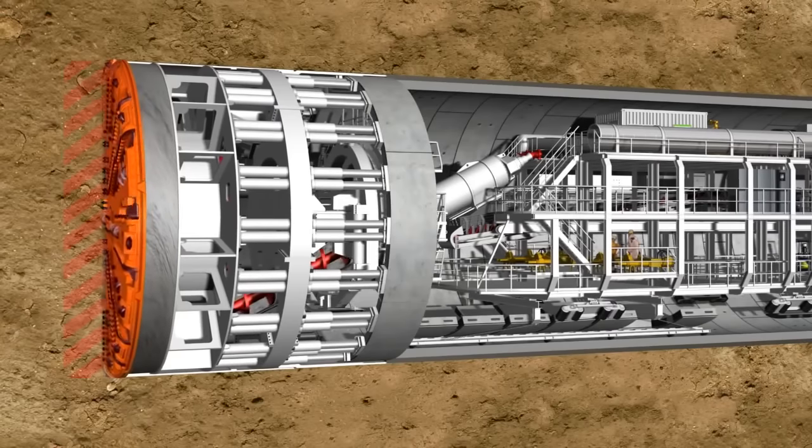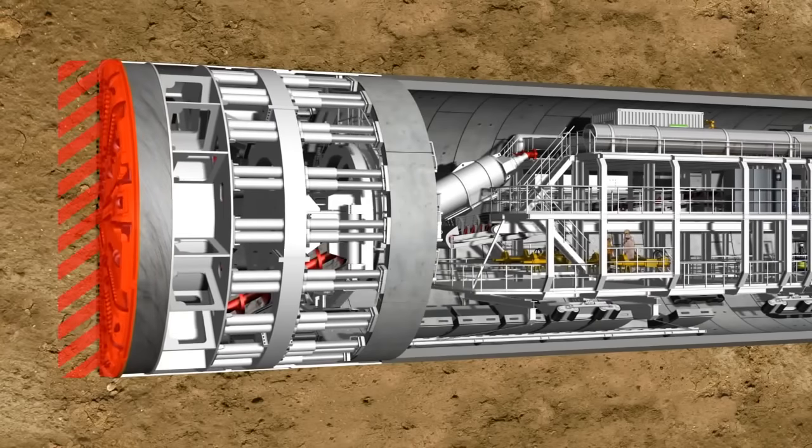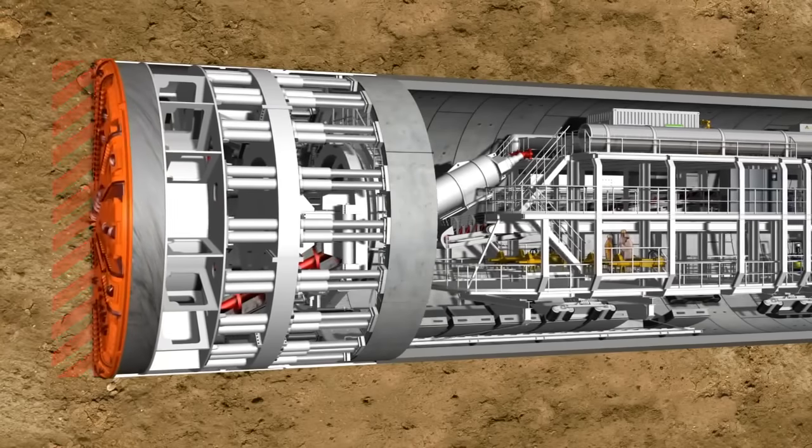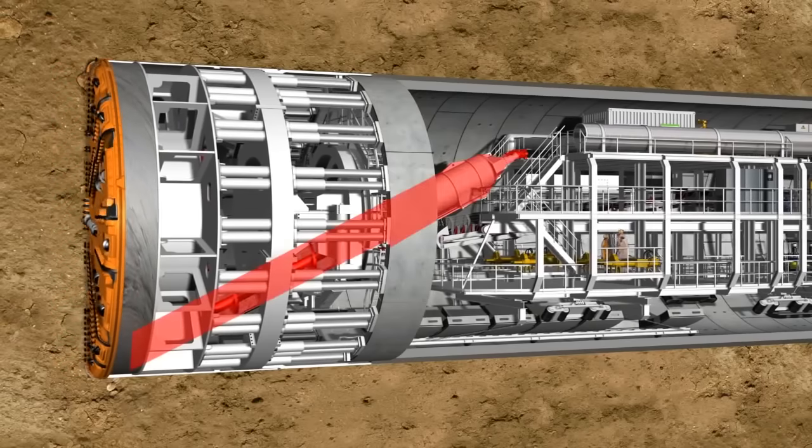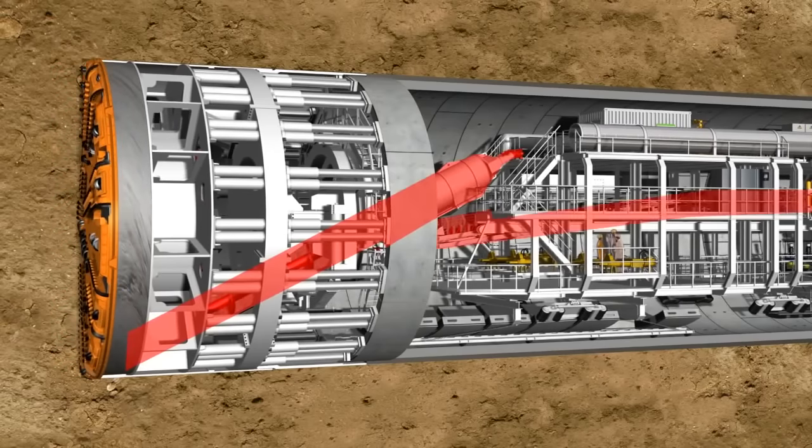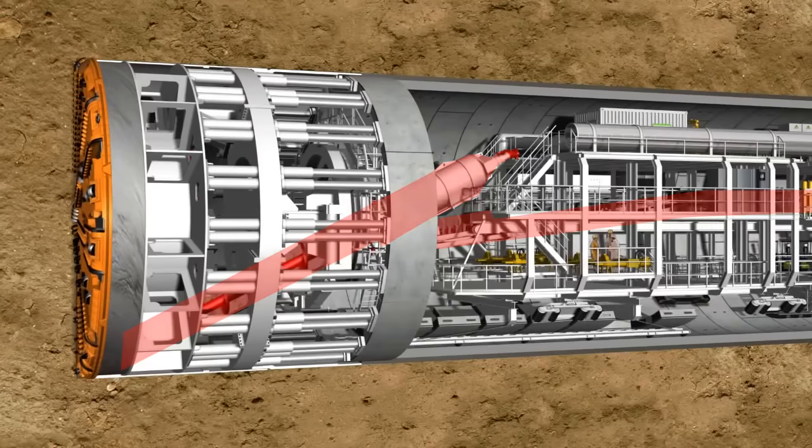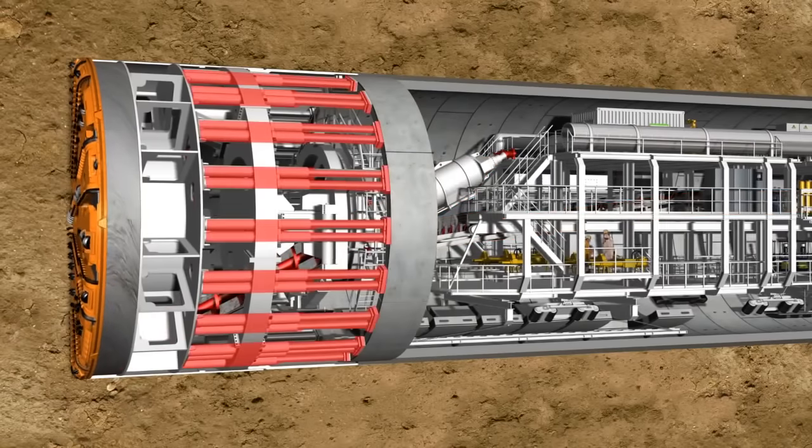With its rotating cutting wheel, the tunneling machine breaks the material from the tunnel face. The material is then transferred to the belt conveyor system in the rear of the shield via a screw conveyor, while the hydraulic cylinders press the machine forward continuously.